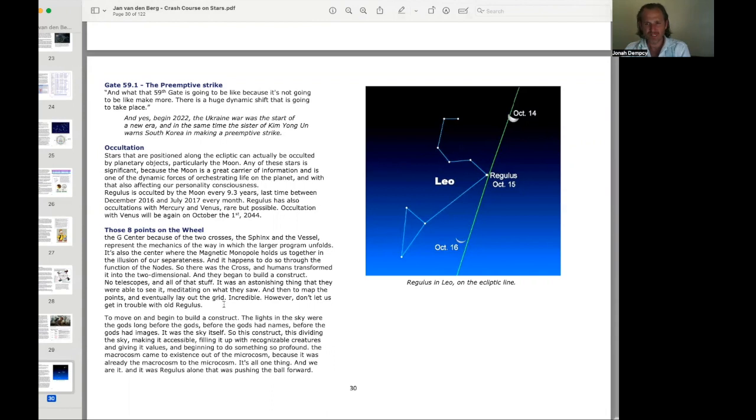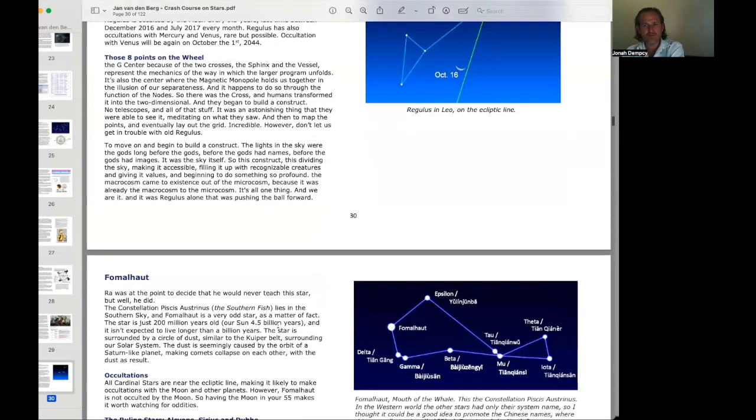However, don't let us get in trouble with old Regulus. To move on and begin to build a construct. The lights in the sky were the gods long before the gods, before the gods had names, before the gods had images. It was the sky itself. So this construct, this dividing the sky, making it accessible, filling it up with recognizable creatures and giving it values, beginning to do something so profound, the macrocosm came to existence out of the microcosm. It's all one thing, and we are it. And it was Regulus alone that was pushing the ball forward.